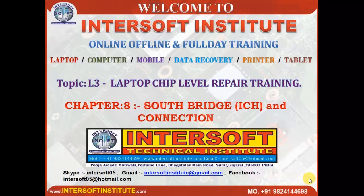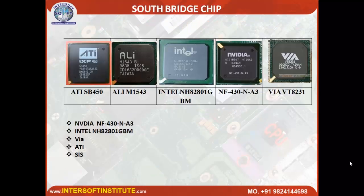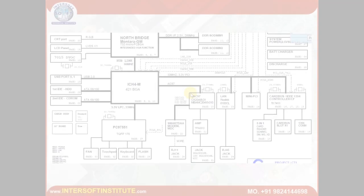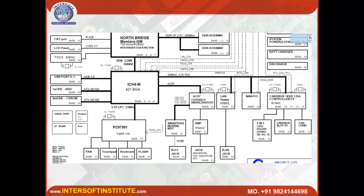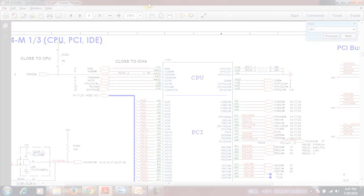Chapter 8: southbridge and connections detail. Today we will see the southbridge in the older board and then the PCH in the newer board. In older boards this type of IC is the southbridge, but in newer boards — i3/i5/i7 — there is no southbridge; instead there is a PCH controller. When we open the diagram it will show northbridge, southbridge, and I/O. This motherboard is the CT-1.